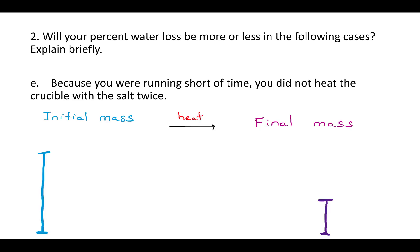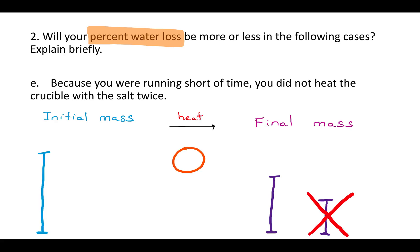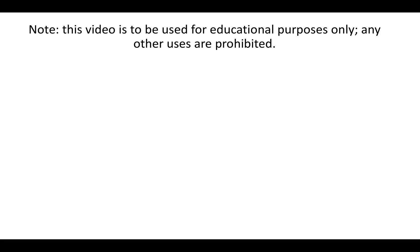Finally, for scenario E, because you were running short of time, you did not heat the crucible with the salt twice. Every time you heat the crucible, a little more water evaporates. If you didn't heat the salt twice, less water is going to evaporate, and the final mass is going to be a little bigger than it otherwise would have been, because it still has some water sticking to it. How does that affect the percent water loss, which is the difference between the initial and the final mass? That's what you'd want to answer here.